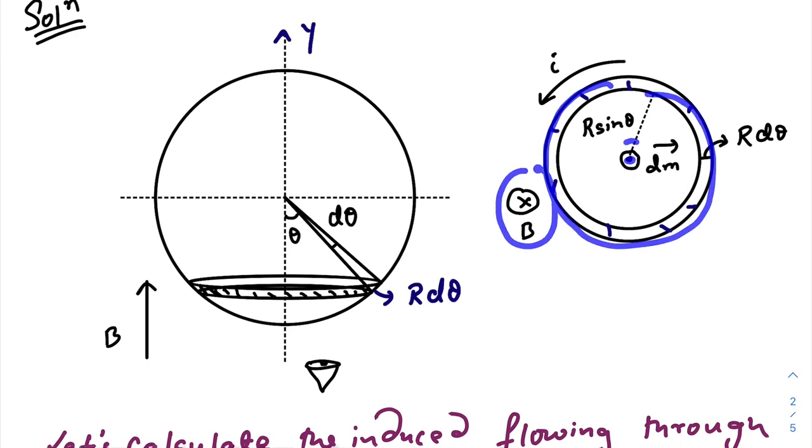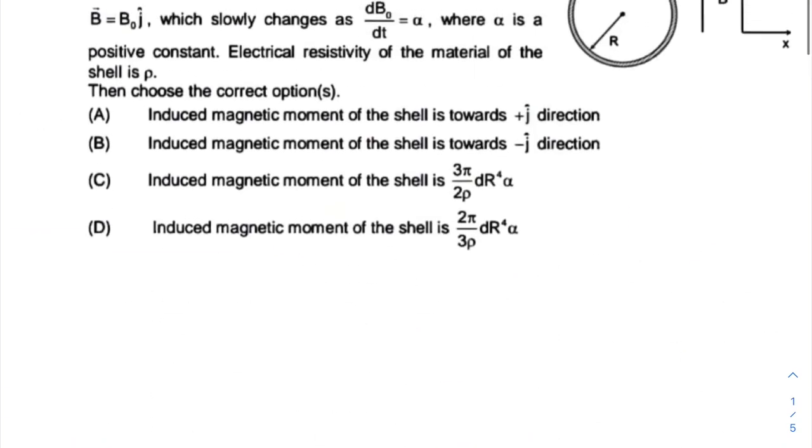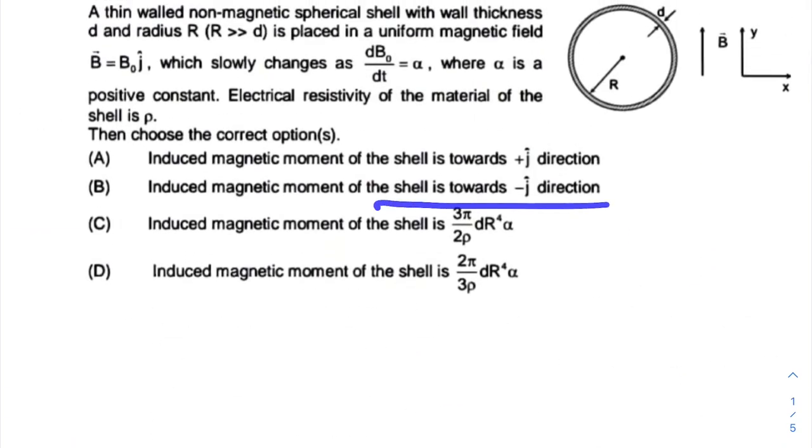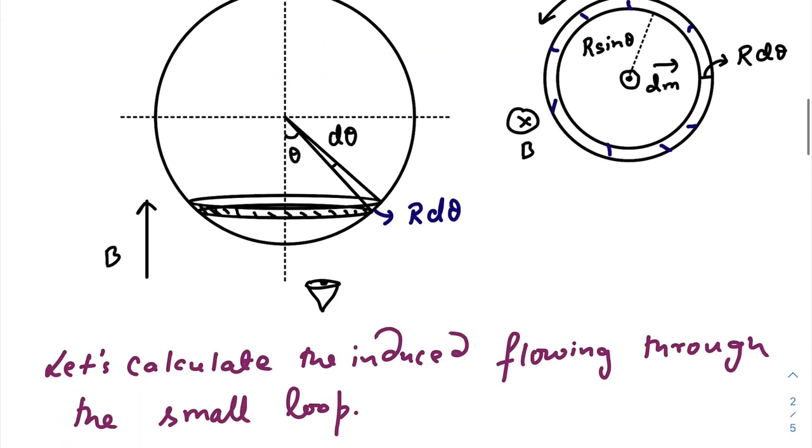So the direction of the magnetic moment due to this ring only will be opposite to this magnetic field. So the first option, that is the induced magnetic moment should be in the negative j direction. So option B is correct without any doubt. Now we need to find out the induced magnetic moment of the shell.